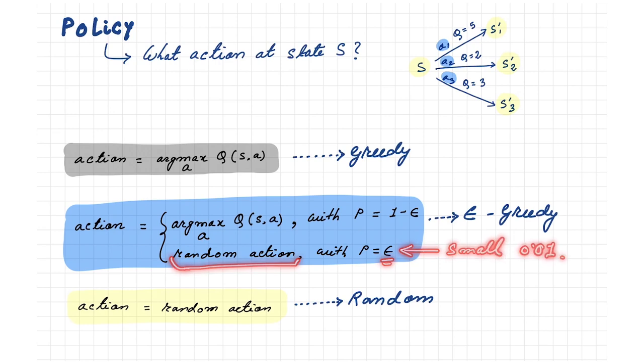On the other hand, a fully random policy doesn't care about the Q values; it selects any action randomly at any state. I think the basics are done now, so let's dive deeper into the game.